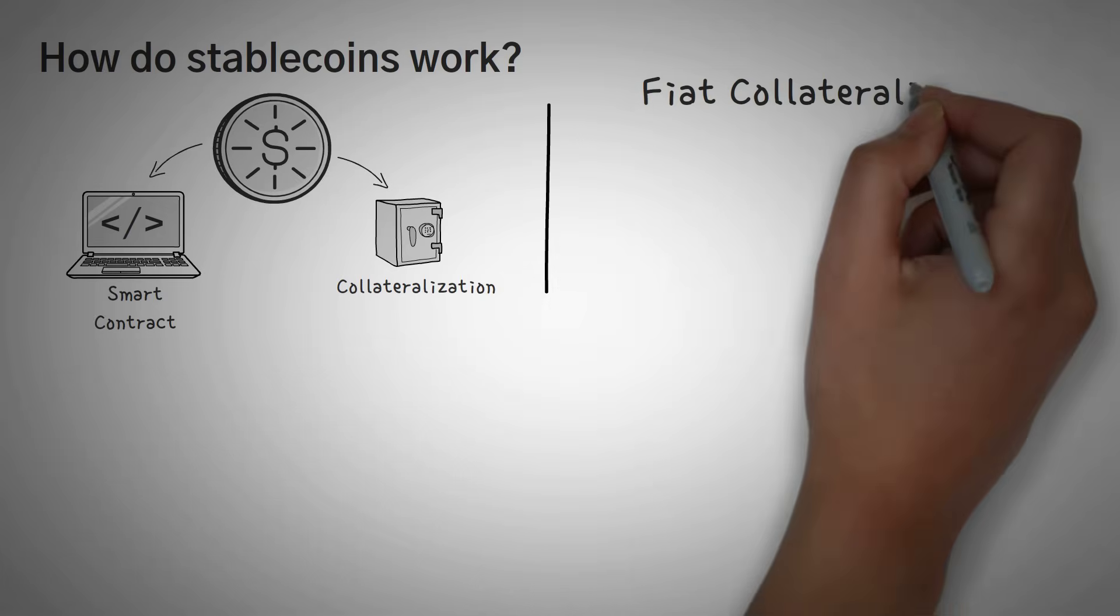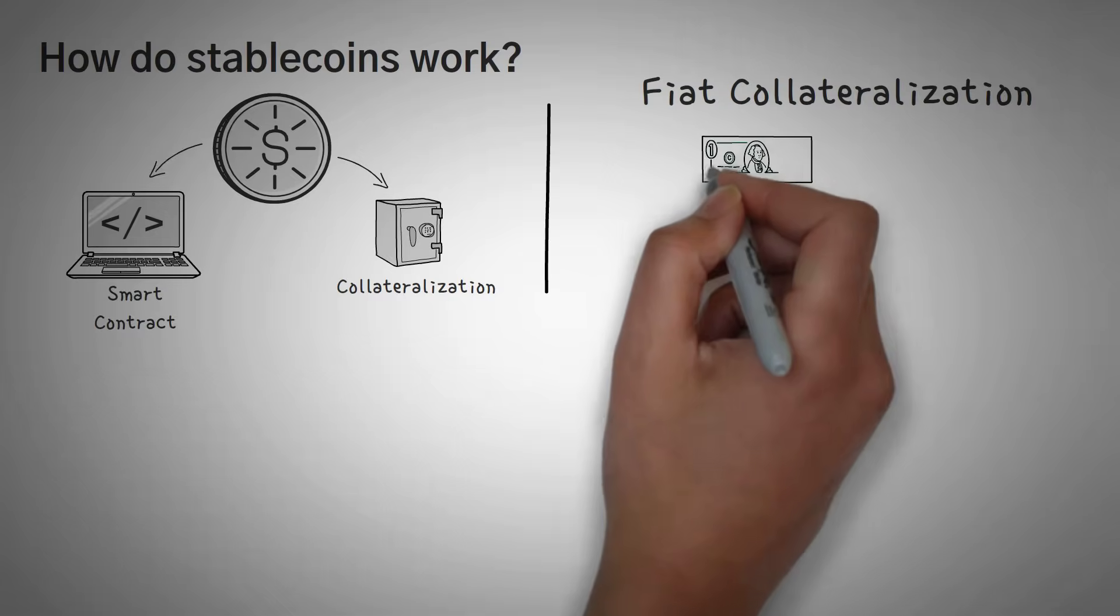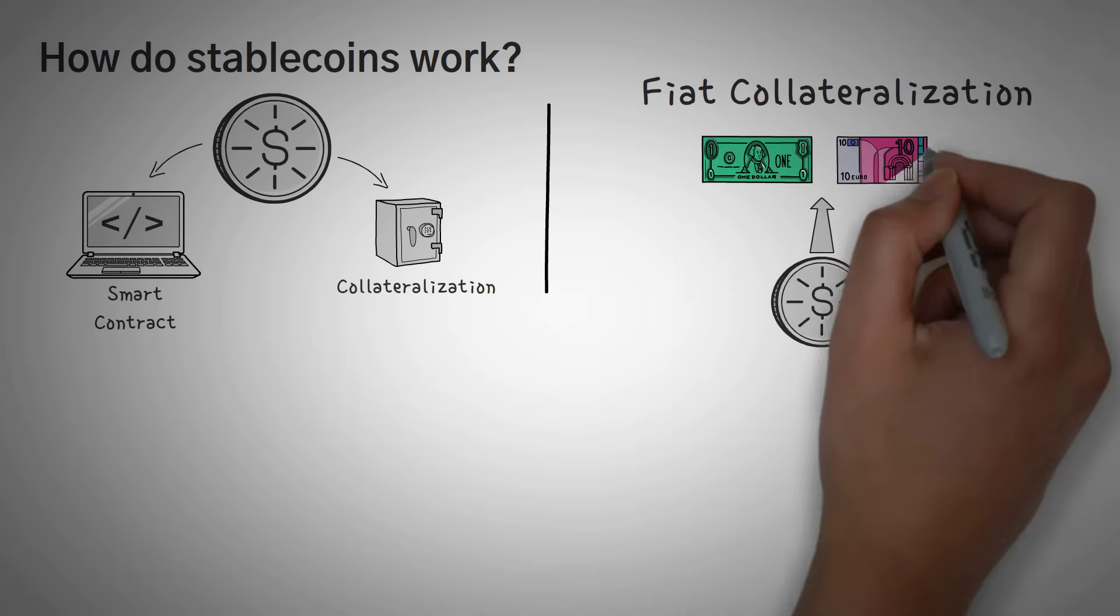First off, fiat collateralization means that each coin is backed by something. In most cases, that is one US dollar. In some, though, it's other countries' currencies like the euro or even gold.